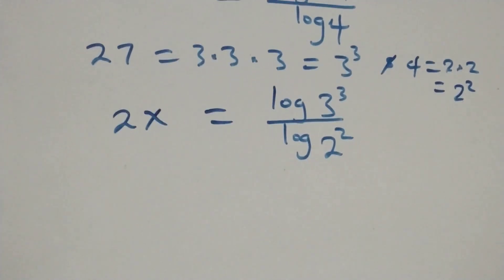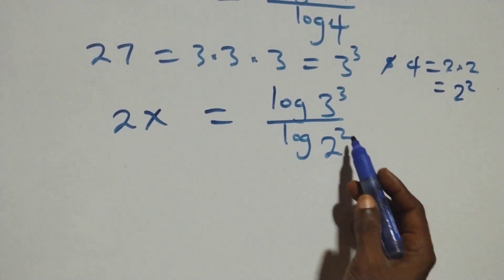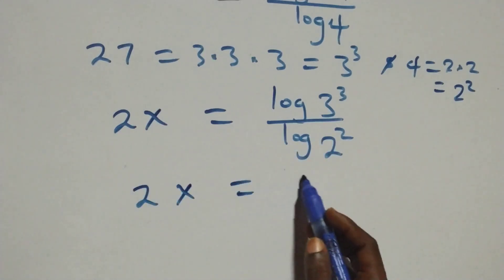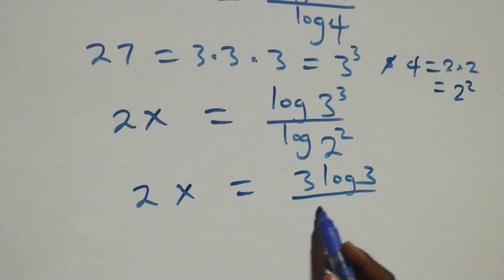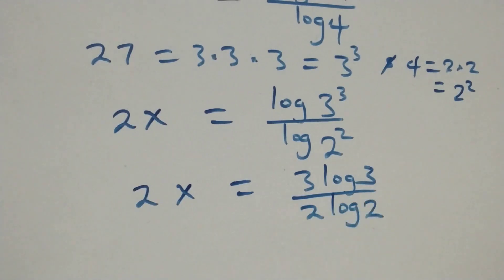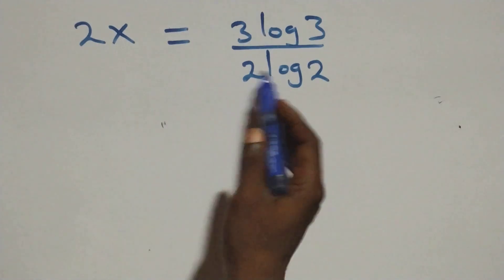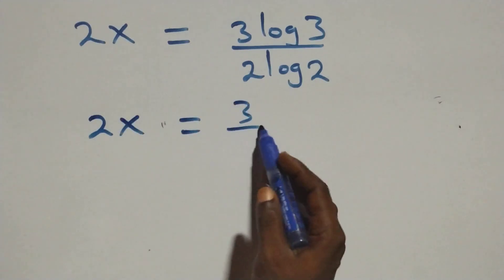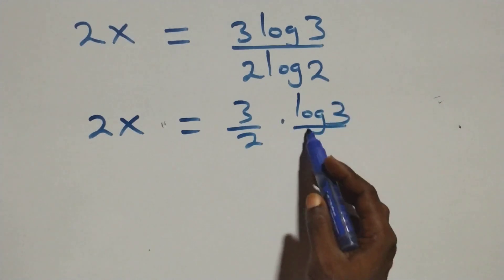Applying the power rule of logarithm again, the three comes down and the two comes down, giving us two x equals three log three over two log two. We can separate these to get two x equals three over two, multiplied by log three over log two.